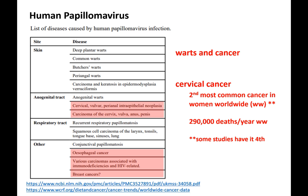Human papillomavirus mainly causes warts and sometimes cancer. Cervical cancer is in the top five most common cancers in women worldwide, with close to 300,000 deaths per year globally. The two most common types of HPV that result in cancer are type 16 and type 18 — these are called HR-HPVs, meaning high risk.